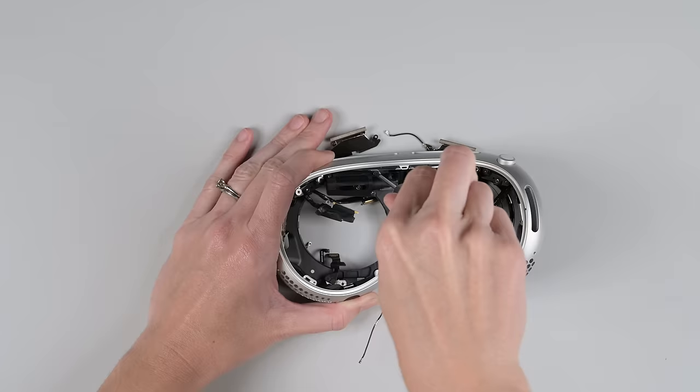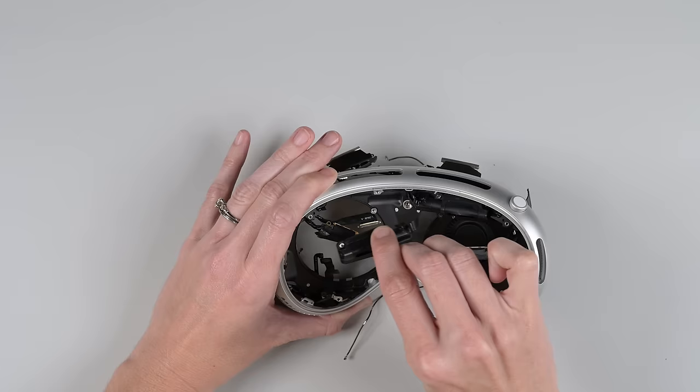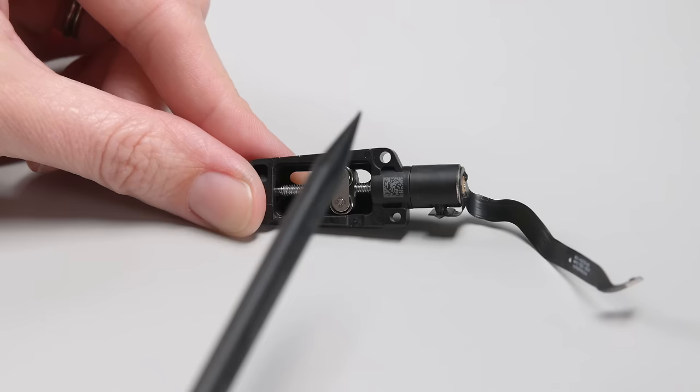For my last trick, a seemingly innocuous little motor that does a big job. This little stepper motor turns a lead screw to park the lenses in the perfect spot for your eyeballs.